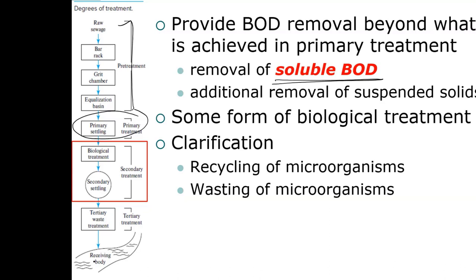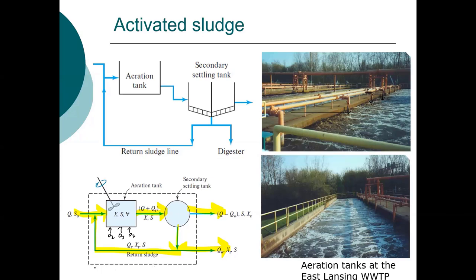The removal of BOD that we achieve in primary settling is organic material attached to suspended solids — we refer to that as suspended BOD. We get no soluble BOD removal. Then water from the primary basin moves into a biological treatment process, and that's what we're focused on here — activated sludge. We have a concentrated suspension of microorganisms that we're using to degrade the soluble BOD. Here are several photos from the East Lansing wastewater treatment plant, showing air flowing and aerating the waste.